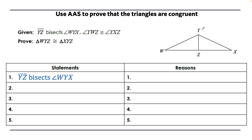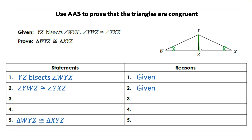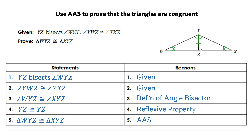Another blank proof. Given: YZ bisects angle WYX, and angle YWZ is congruent to angle YXZ. We want to prove triangle WYZ is congruent to triangle XYZ using angle-angle-side. Because of the angle bisector, angle WYZ is congruent to angle XYZ by the definition of angle bisector. For the side not between the angles, YZ is congruent to YZ by the reflexive property. That gives us angle-angle-side.